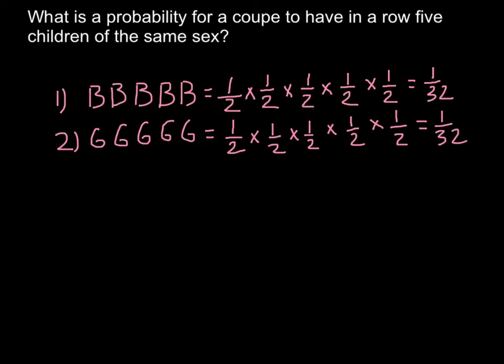And now we can answer the question. In order to do this, we just have to add all these answers. So chances for all children to be boys, we have to add with chances for all children to be girls. And our answer would be 2 over 32. Or we can say that this is the same as one over 16. So this would be our answer.